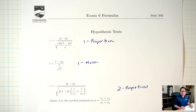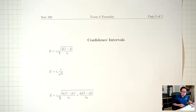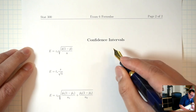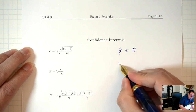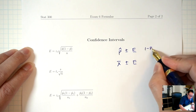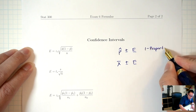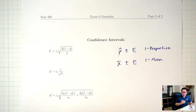This is the same formula sheet we used in the last lecture. The front page we talked about in the last lecture — those are the formulas for hypothesis tests. Today I want to talk about the second page, which are the formulas for confidence intervals. Back in chapter 8, the end product looked like either p-hat ± margin of error or x-bar ± margin of error. The first was for the one-proportion situation, the second for the one-mean situation. Today we'll talk about the two-proportions and two-means situation.